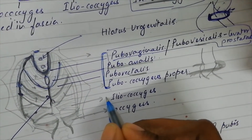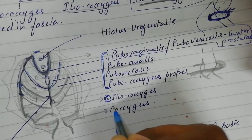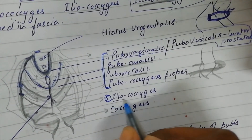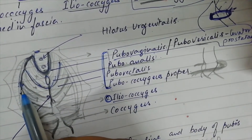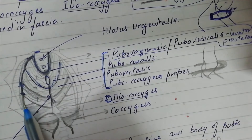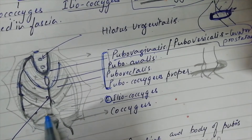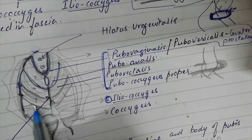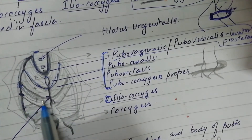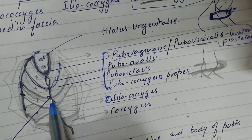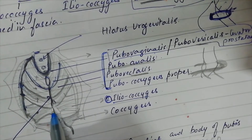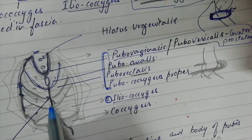The next part is Iliococcygeus. The Iliococcygeus part arises from the posterior half of the white line over the lateral pelvic wall and is inserted onto the anococcygeal raphé and the lower portion of the sacrum.